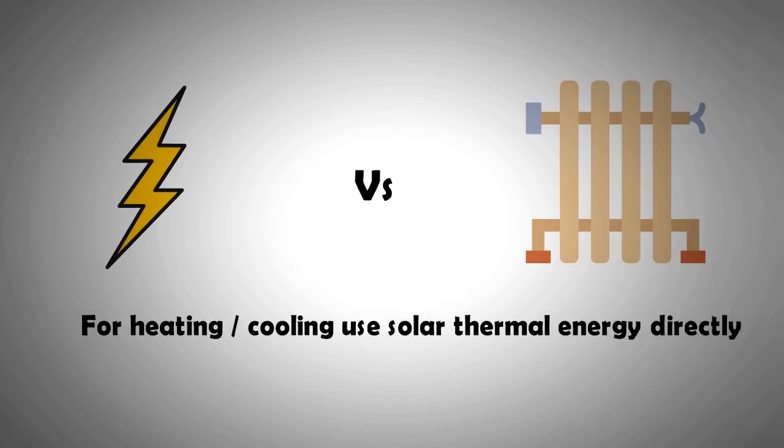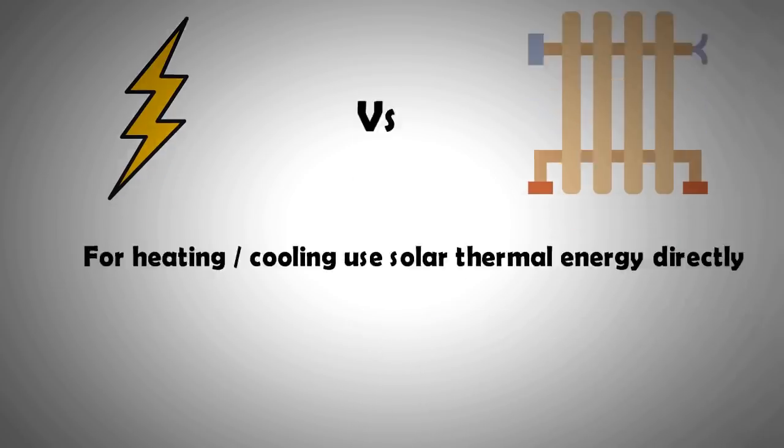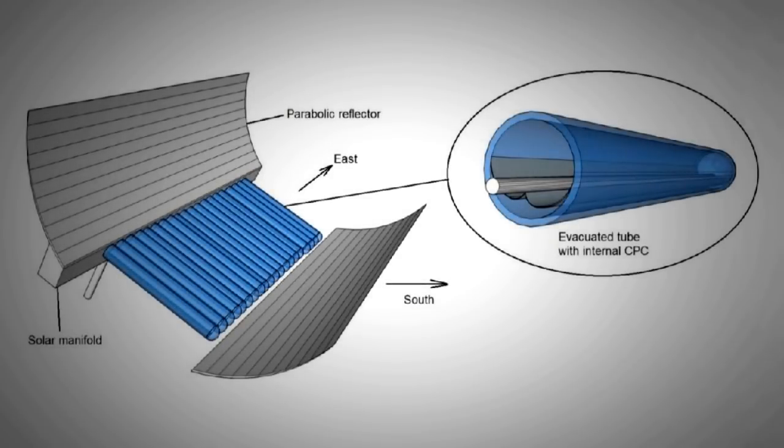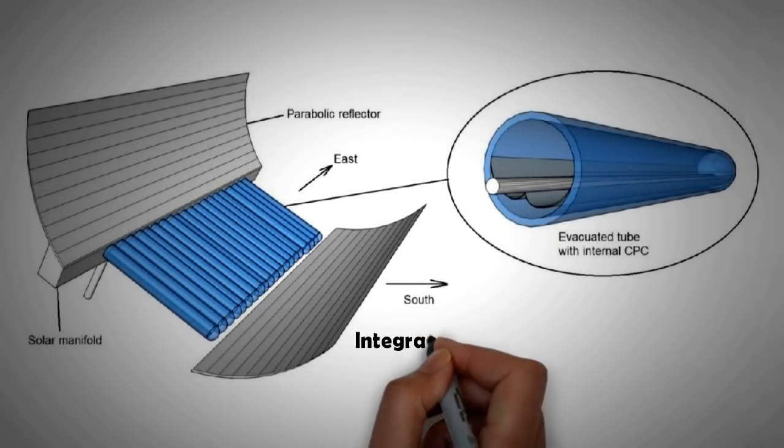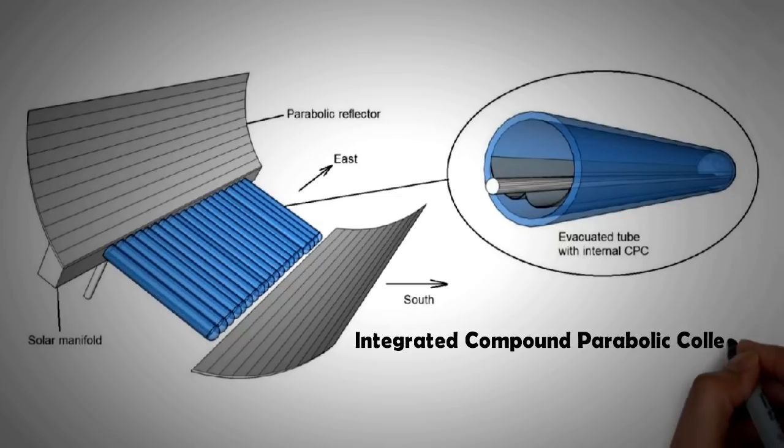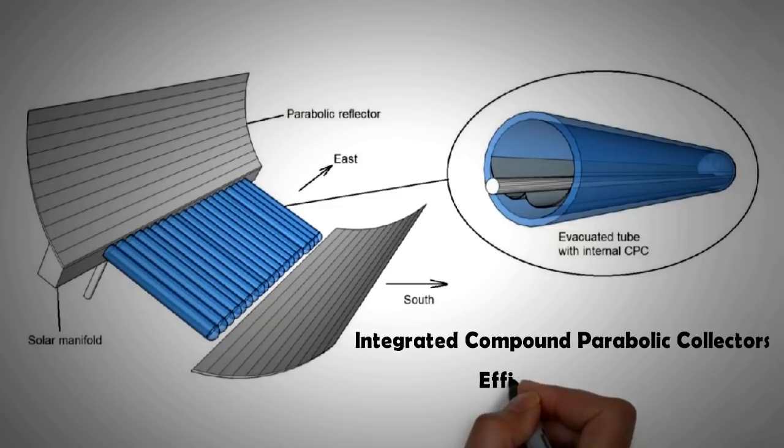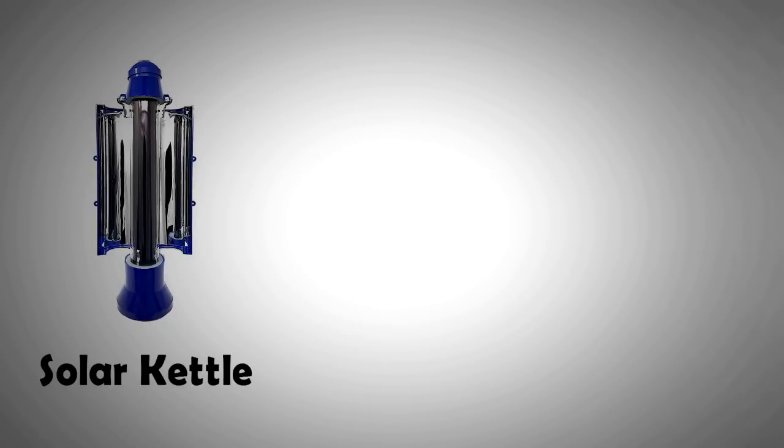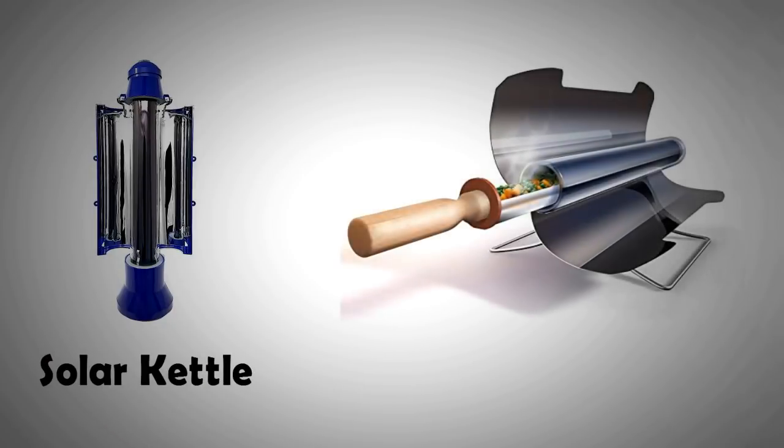Solar thermal technology over the last 10 years has further improved. The development of integrated compound parabolic collectors in evacuated tubes and the use of nanofluids has increased the efficiency of solar thermal systems to up to 90%. We have seen the emergence of commercial products like solar kettles and solar barbecue grills in the last decade.